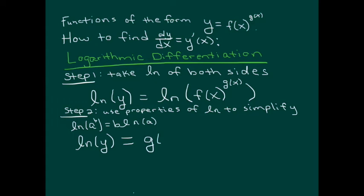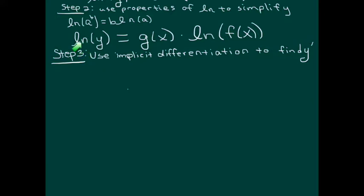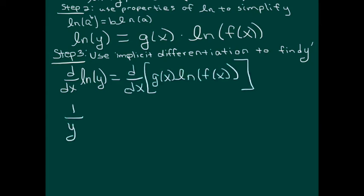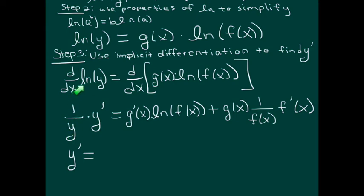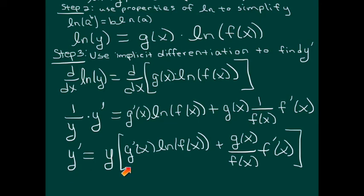On the right-hand side, we bring g(x) down in front as a multiplier, leaving ln of f(x). The next step is implicit differentiation. On the left I have ln of y(x), and on the right I have a product. Taking the derivative with respect to x on both sides, the left side uses the chain rule: derivative of the outside is 1 over y, times the derivative of the inside, which is y prime. On the right, we apply the product rule: derivative of g times ln of f(x), plus g times (1 over f) times f prime. Then multiply both sides by y to solve for y prime.